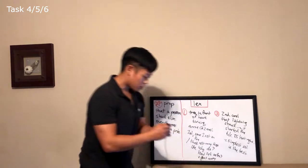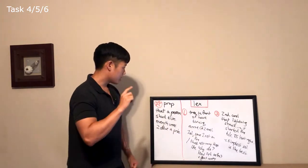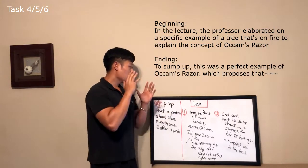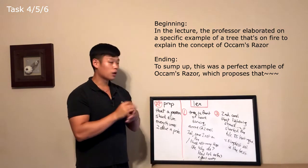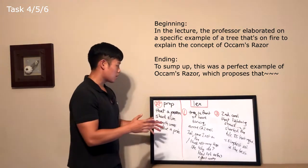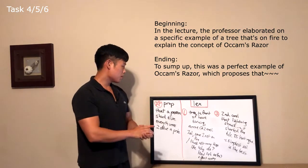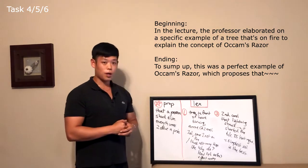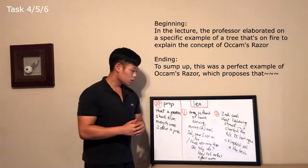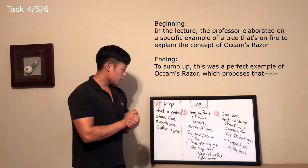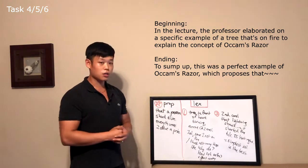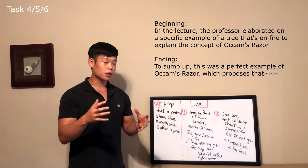In this lecture, the professor gave one example, and this example was about a tree that's on fire. So the beginning sentence is: the professor elaborated on a specific example of a tree that's on fire to explain the concept of Ocam's Razor. The ending sentence is: to sum up, this was a perfect example of Ocam's Razor, which proposes that a person should eliminate everything unnecessary to solve a problem. As soon as you realize what the professor is going to explain — in this case, he said 'here's an example' — you should be able to organize both the beginning and ending sentence.